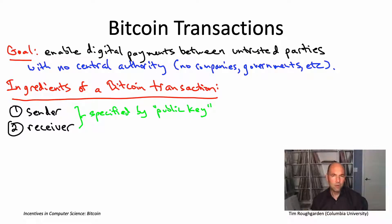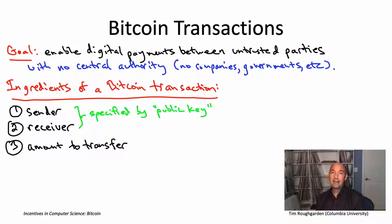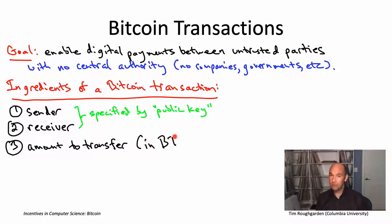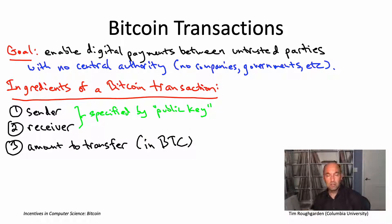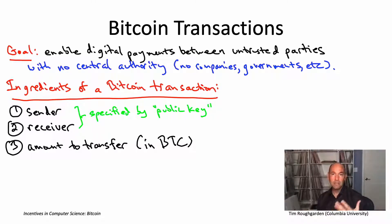So a transaction, of course, you're transferring funds, so you should also specify exactly how much funds you're transferring. And for a Bitcoin transaction, what are those funds? Those funds are in the native currency — they're in the currency of Bitcoins. When you're talking about the currency of Bitcoin, the abbreviation is BTC. Just like you'd use USD for a US dollar, you use BTC to talk about the number of Bitcoins involved.